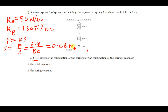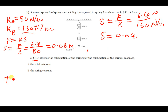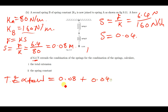That was the extension before the second spring was added. After adding spring B, we find its extension using the same formula: S equals F over K, but now K is 160. So SB equals 6.4 divided by 160, which gives 0.04 meters. The total extension is SA plus SB: 0.08 plus 0.04 equals 0.12 meters.